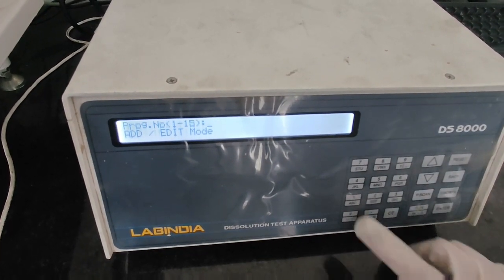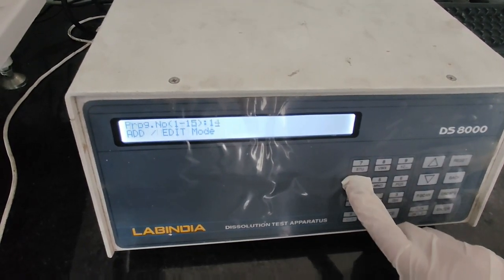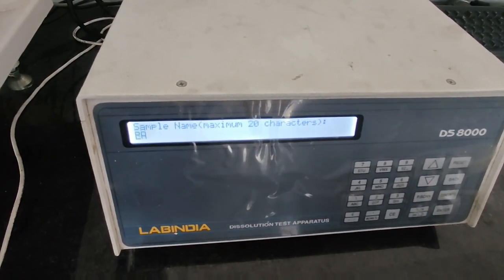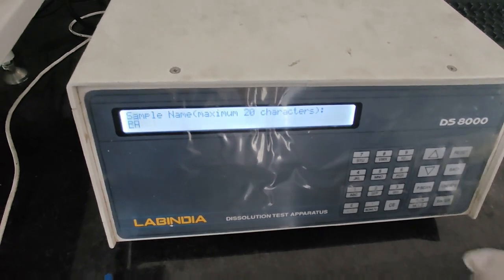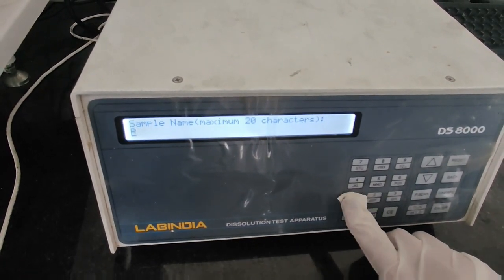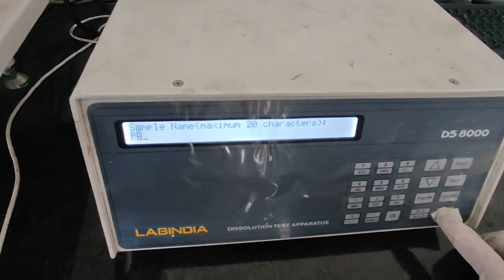We will give the program number. For example, I am giving number 14. Then again press enter. Then give program name. For say, I am doing dissolution of paracetamol tablets, so I will give P and A.